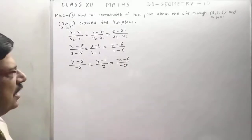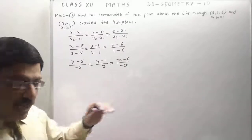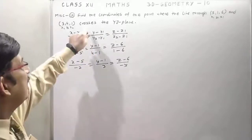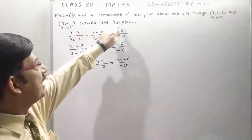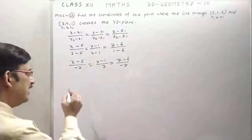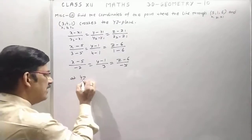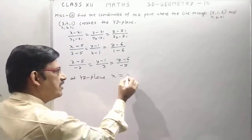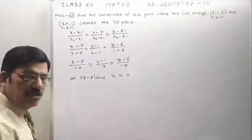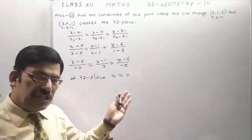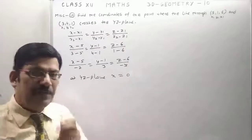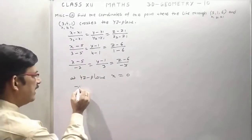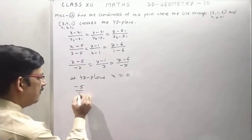This is the equation of the line. Now we have to find the point where the line crosses the YZ plane. At the YZ plane, x is equal to 0 — this is the Cartesian equation of the YZ plane. So substitute 0 in place of x: (0 minus 5) upon minus 2 equals (y minus 1) upon 3 equals (z minus 6) upon minus 5.